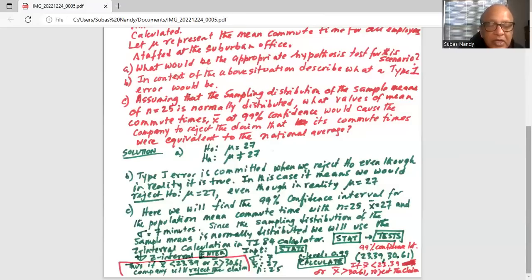So if x bar is less than 23.39 that is less than the lower boundary of the 99 percent confidence interval or x bar greater than 30.61 which is the upper boundary of the 99 percent confidence interval for the mean we will reject the null hypothesis that mu is equal to 27.